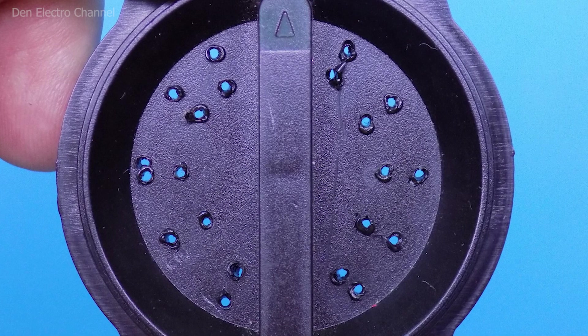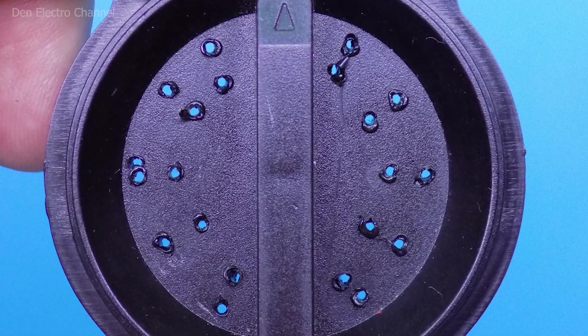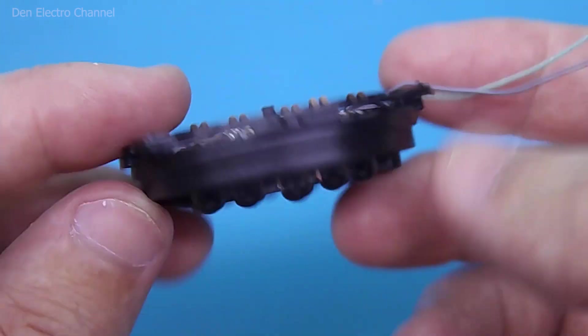I make holes in the wheel with a heated paper clip. Of course, the melted plastic around the edges of the hole must be removed. Otherwise, the LEDs will stand up unevenly. When the LEDs are installed, you get such a cute little thing.